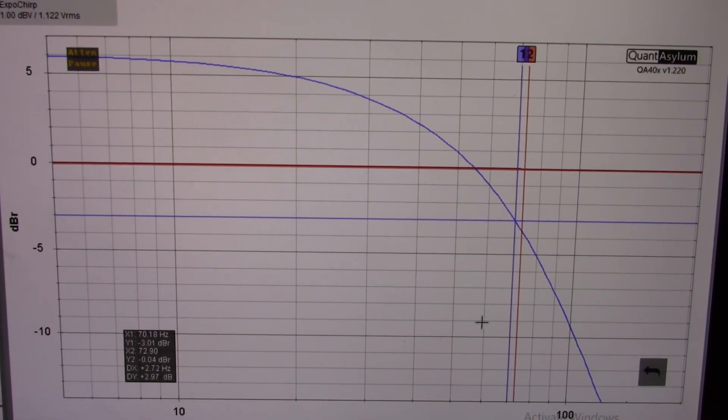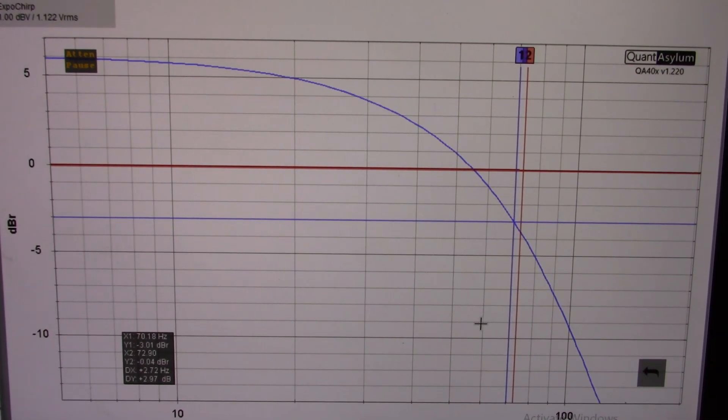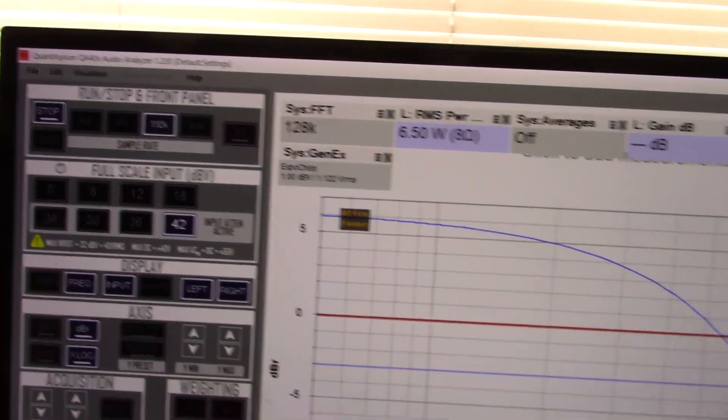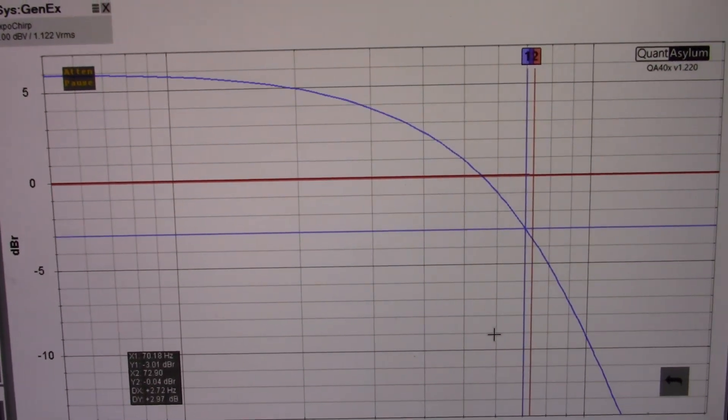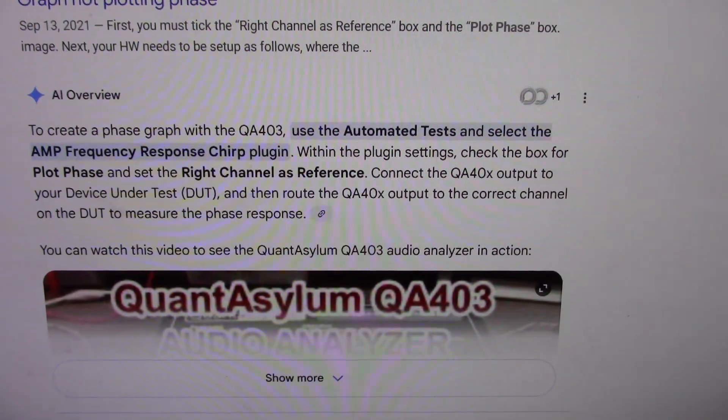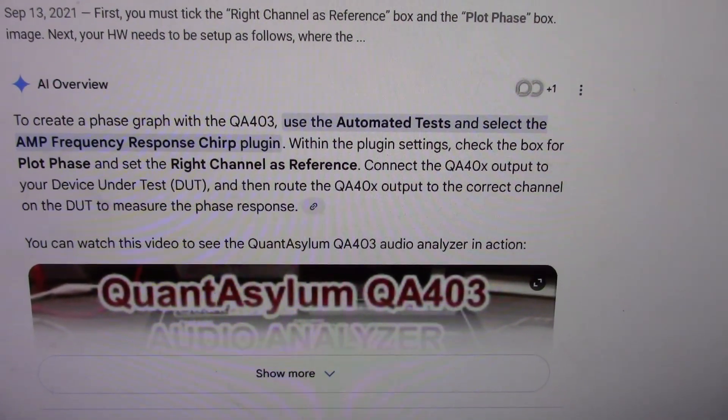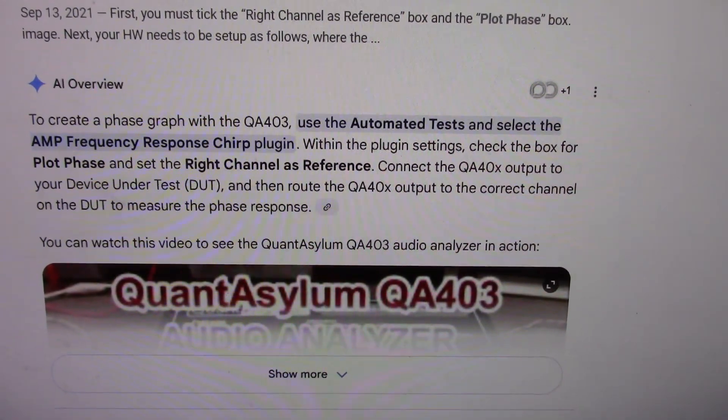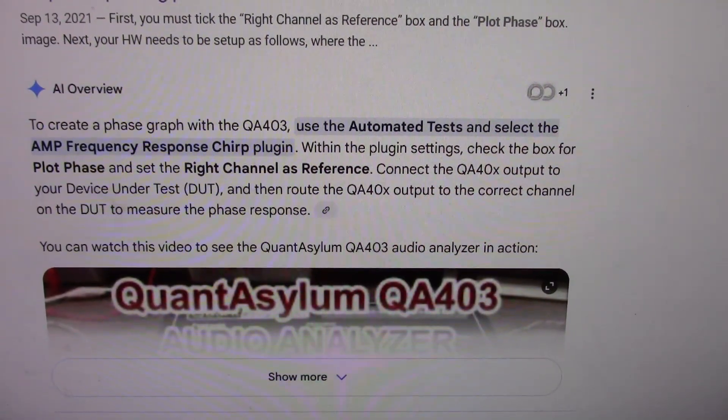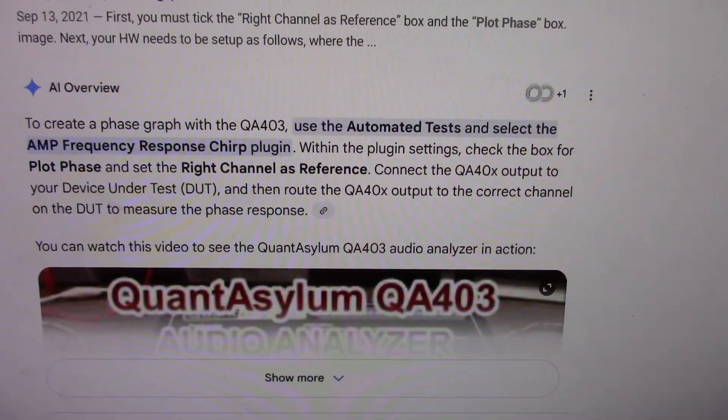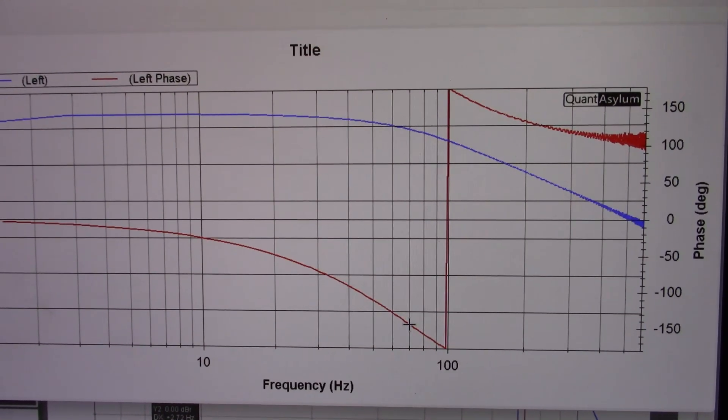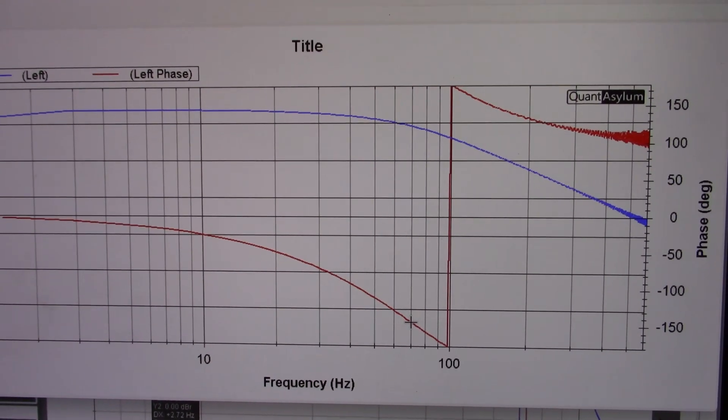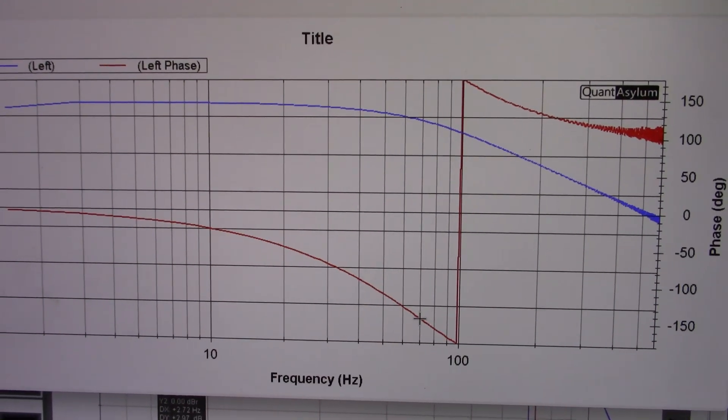I remember when I first got the Quantasylum 403 reading something about being able to plot phase graphs on this thing. So I'm looking around the software, the automated tests, and I don't really see anything. Leave it to AI. I just type it into Google and it comes up with this response here. You know I'm so happy that my electric bill is going to skyrocket because of all these data centers they're going to have to put up to handle all the AI. And it works. We got a phase plot here. Boy this Quantasylum you learn something new every day. As that project farm guy would say, very impressive!